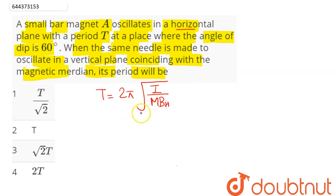In the case of the plane which is in a vertical plane coinciding with magnetic meridian, we can say T' = 2π√(I/m·B).